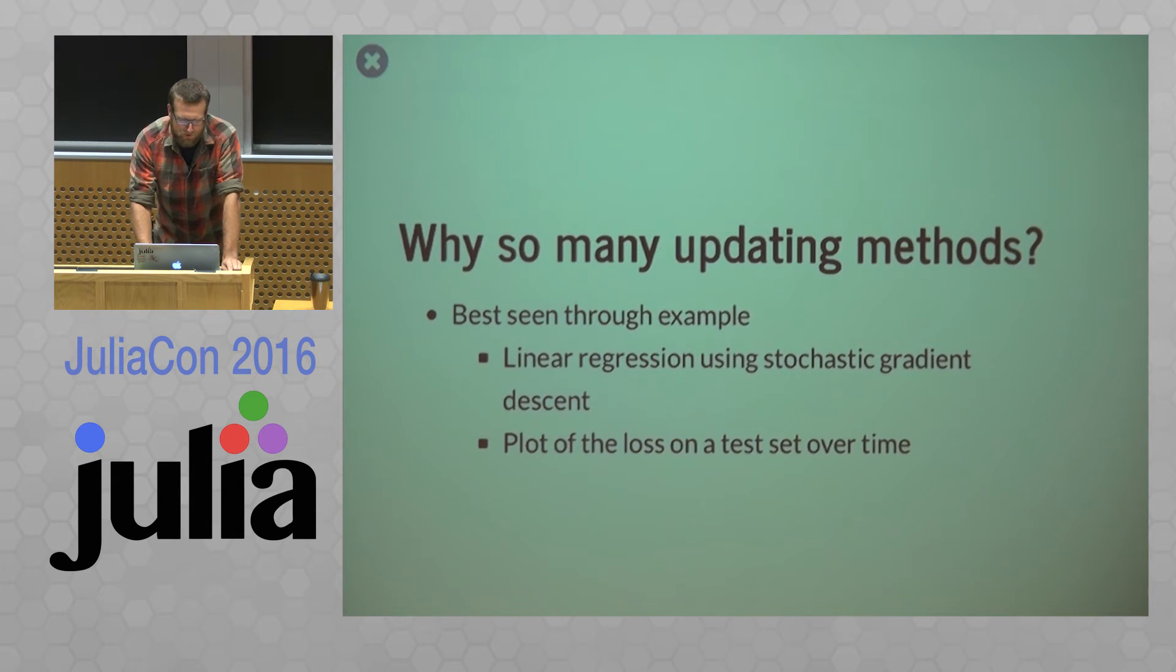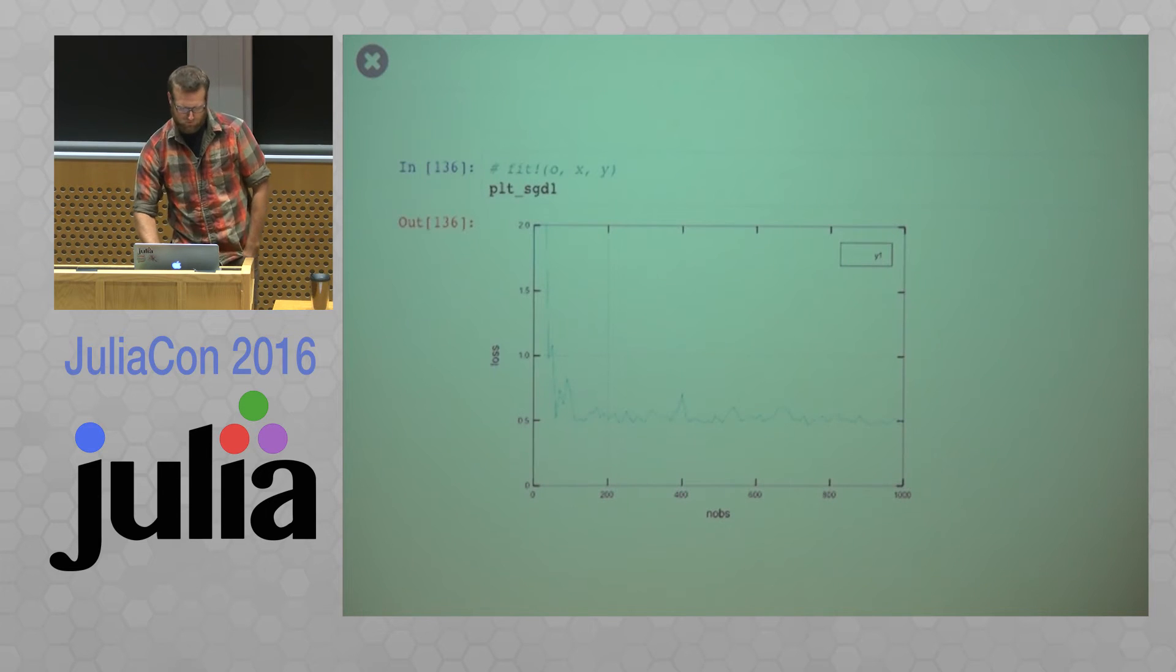So why do we have so many updating methods? So I think this is best shown through example. So we're going to look at linear regression using stochastic gradient descent. And we're going to look at the plot of the loss on a test set over time. So for example, let's look at this slice at 200 observations. So this is after fitting 200 observations of a training set. And this blue line is the loss on the test set over time.